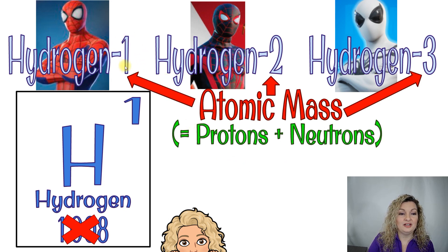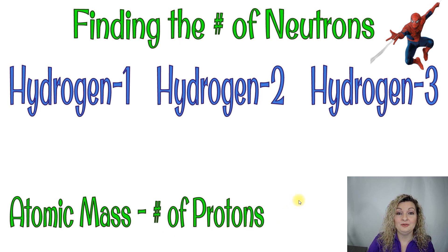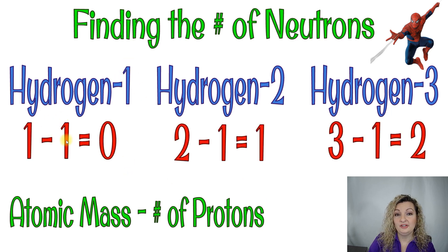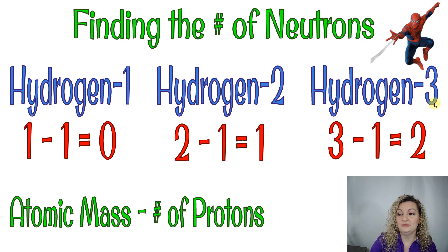We're not looking at that decimal number when working with isotopes. We're going to use the isotope's mass number to calculate the number of neutrons. To find the number of neutrons, we simply do: atomic mass minus the number of protons. Hydrogen has one proton. So Hydrogen-1: 1 minus 1 equals zero neutrons. Hydrogen-2: 2 minus 1 equals one neutron. Hydrogen-3: 3 minus 1 equals two neutrons.